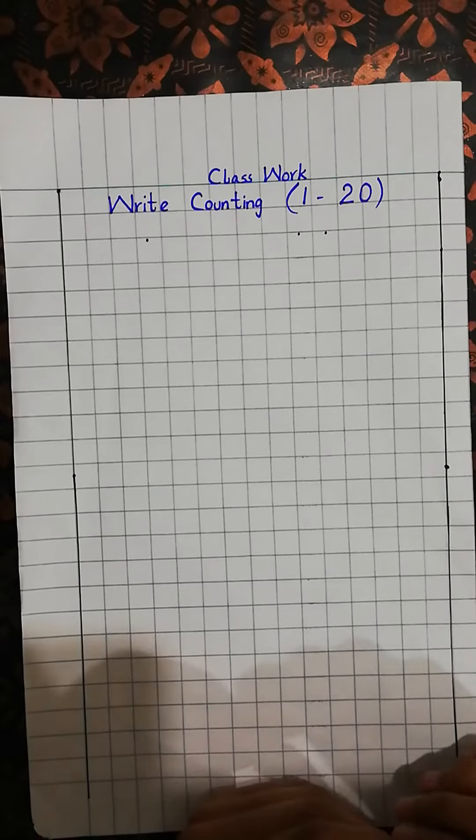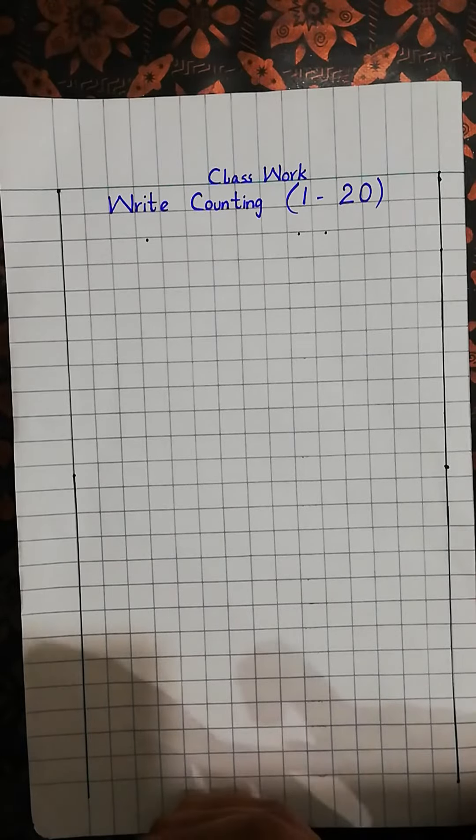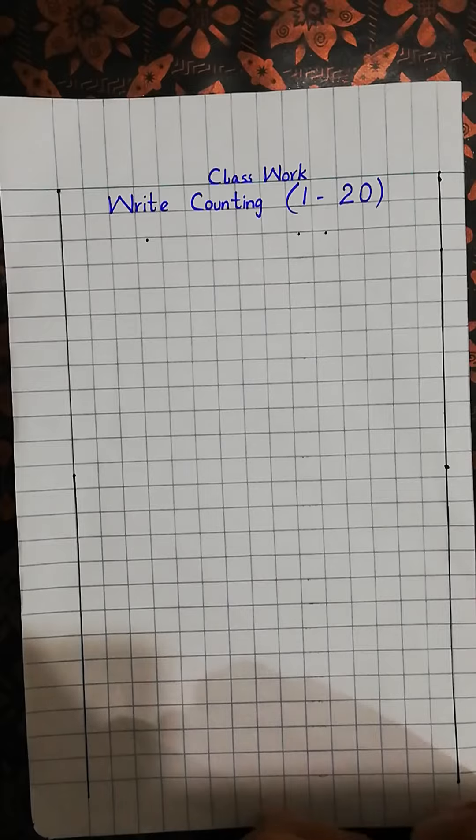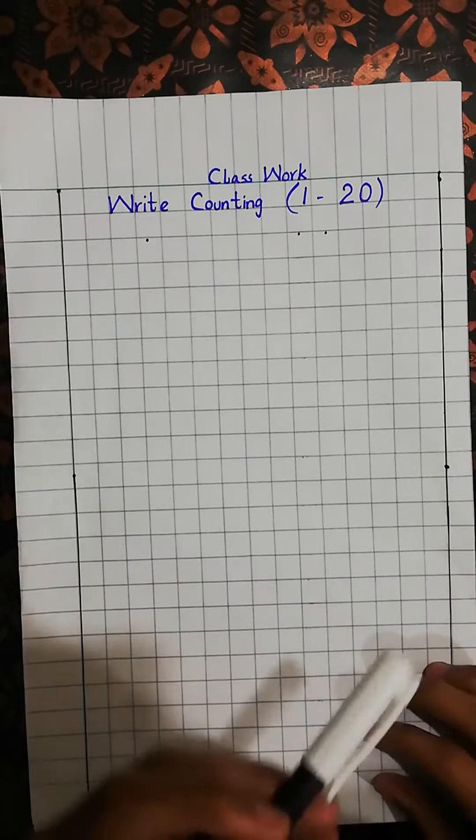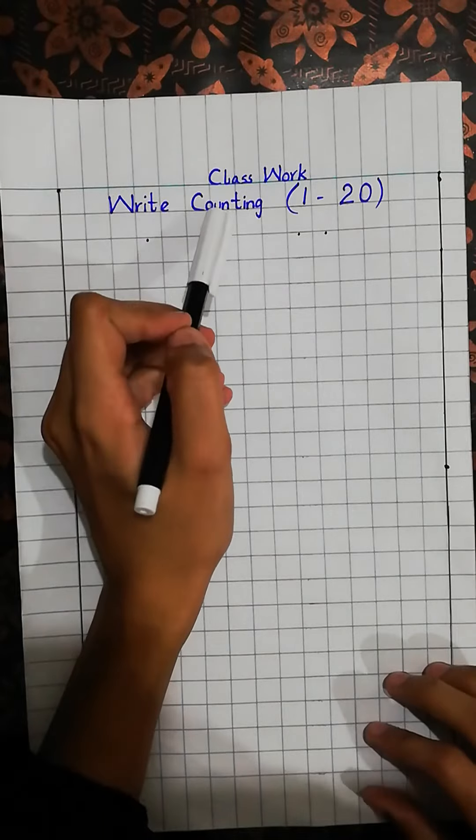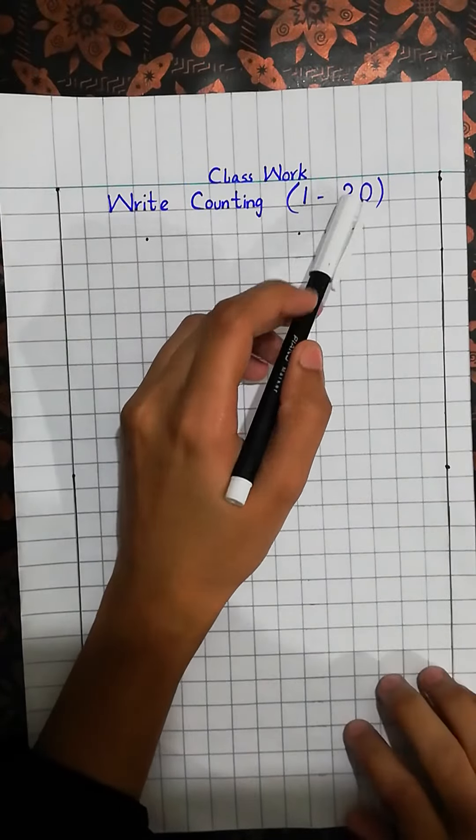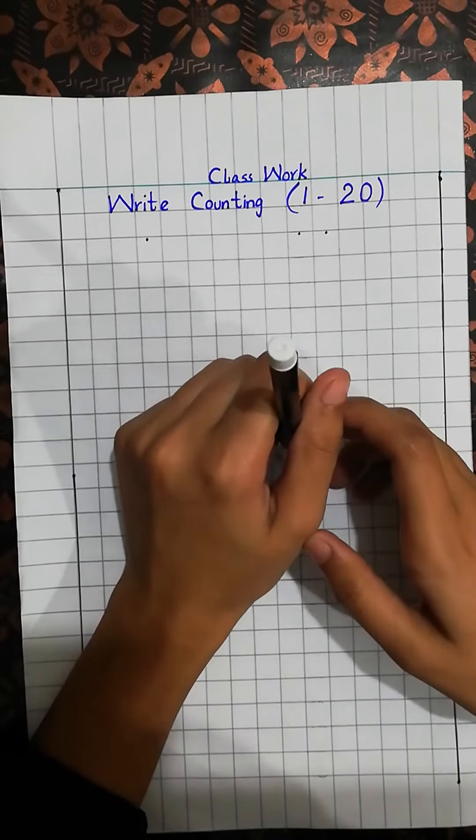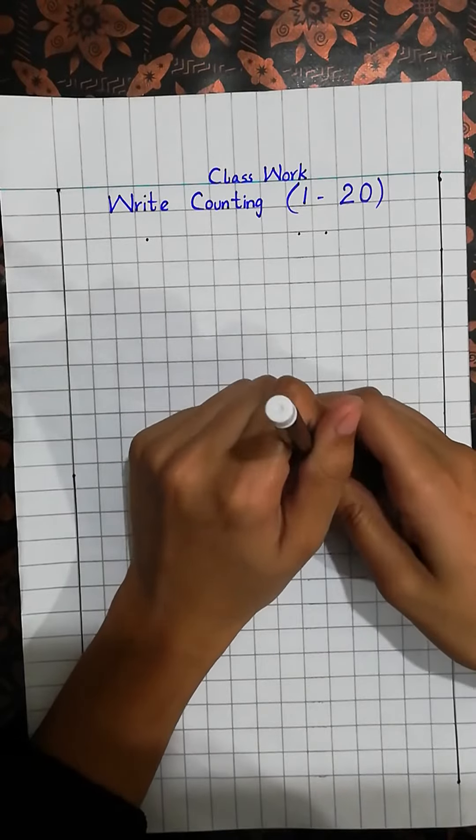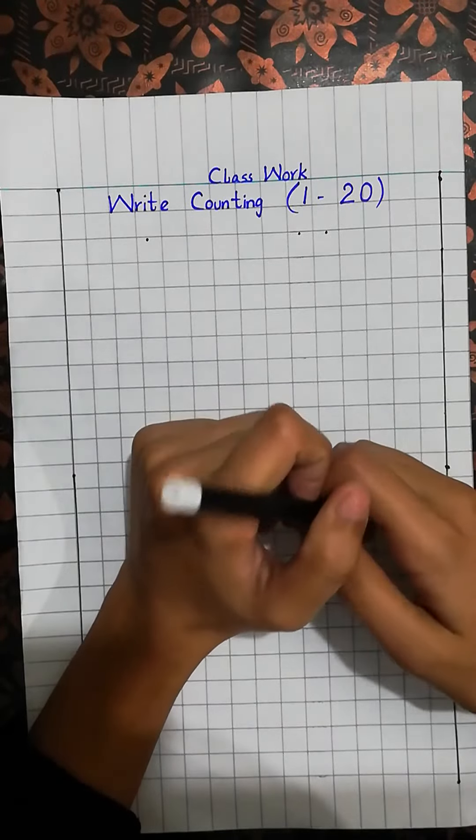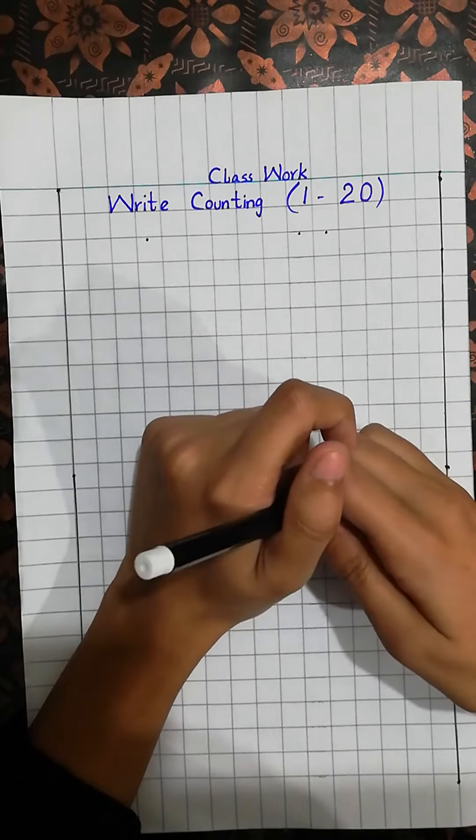As-salamu alaykum wa rahmatullahi wa barakatuhu. Bismillahirrahmanirrahim. Today we are going to learn and write counting 1 to 20. Open your notebooks to the first page, and before starting anything, write Bismillahirrahmanirrahim.